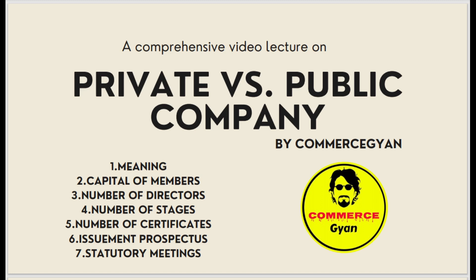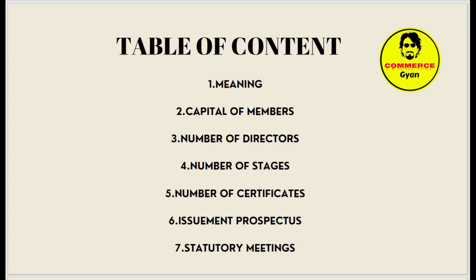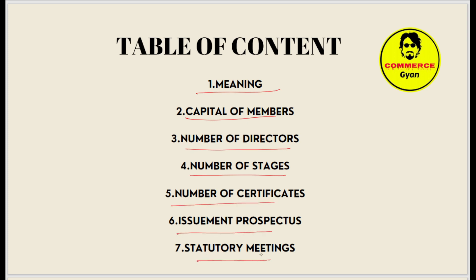Hello friends, welcome to Commerce Gun. In this video we will be discussing private and public companies. Our topic is the meaning of private and public company, including capital, number of members, number of directors, number of stages, certificates, prospectus, and statutory meeting.